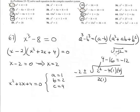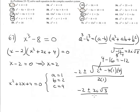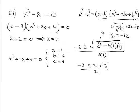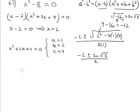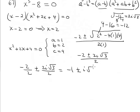Square root of negative 12: factor 12 as 4 times 3, where 4 is a perfect square equal to 2. Don't forget the i because it is negative inside the radical, so √(-12) = 2i√3. So far we have (-2 ± 2i√3) / 2. Splitting the denominator: -2/2 ± 2i√3/2 = -1 ± i√3.